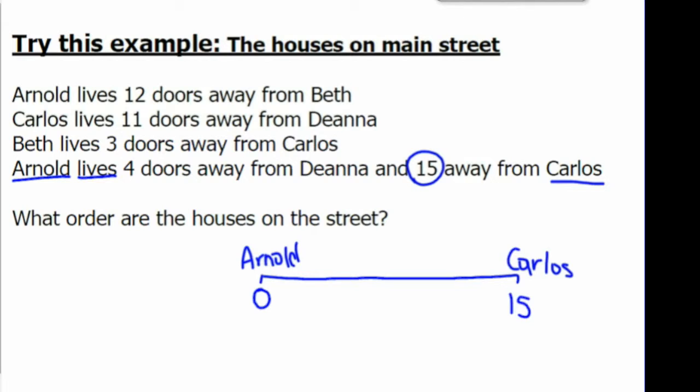Next, let's look at Beth. Arnold lives 12 doors away from Beth. So we're going to put Beth here at number 12 and we'll check because it says Beth lives 3 doors away from Carlos. The distance between 12 and 15 is 3. So we are correct. Beth is at house number 12.